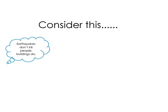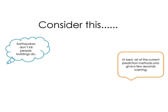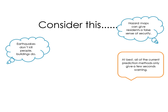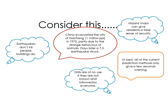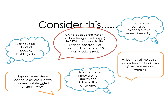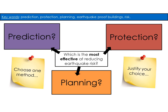Consider these points: earthquakes don't kill people — buildings do. At best, all current prediction methods only give a few seconds warning. Hazard maps can give residents a false sense of security — they might think their area is safe when it's still quite dangerous. China evacuated the city of Haicheng — one million people in 1975, partly due to strange animal behaviour. Days later, a 7.3 earthquake struck. Drills are of no use if they are not known and followed by everyone. Experts know where earthquakes are likely to happen, but struggle to establish when. Using that information, has your view on which strategy is most effective changed? Justify your choice.